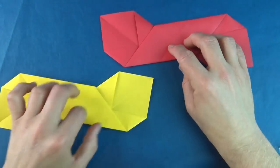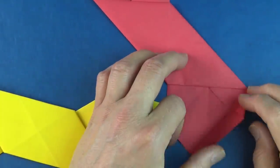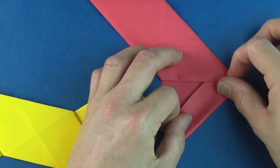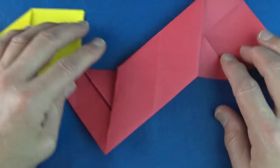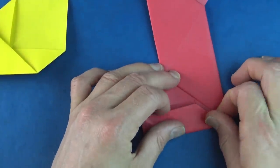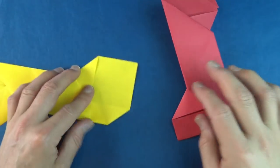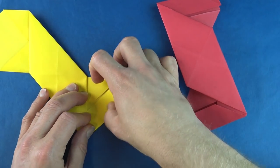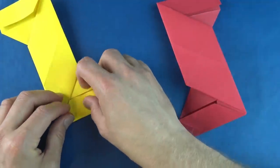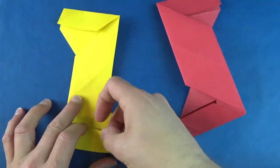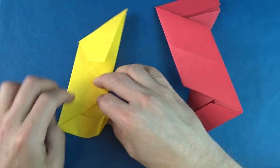It looks like bow ties. Now turn over and fold this flap up so that this edge aligns with this edge.